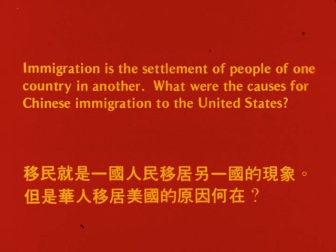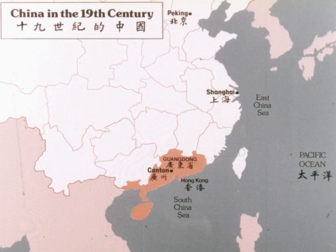Immigration is a settlement of people of one country in another. What were the causes for Chinese immigration to the United States? More than 95% of the early Chinese immigrants were Cantonese, meaning they came from Guangdong, a province in South China.